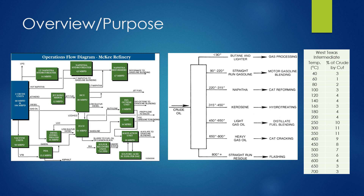An example of one of those assays is that figure on the right for West Texas Intermediate. By using both the crude unit description and the crude assays, we could pick a crude and then find out what the value of the products was.